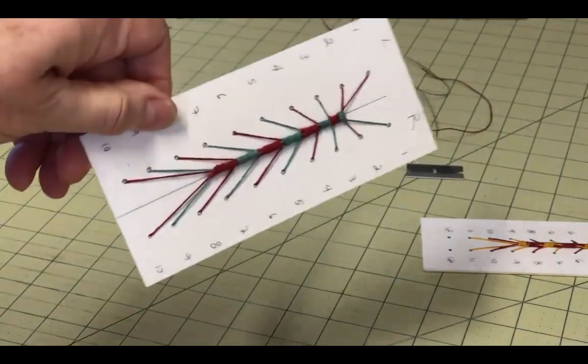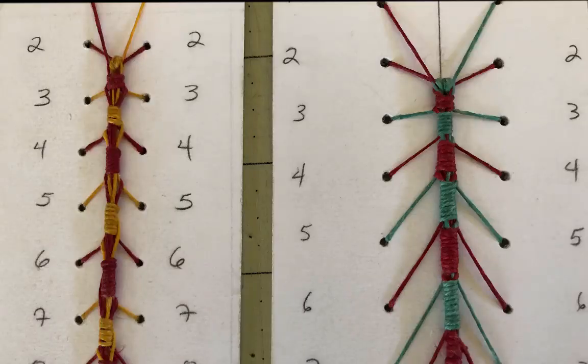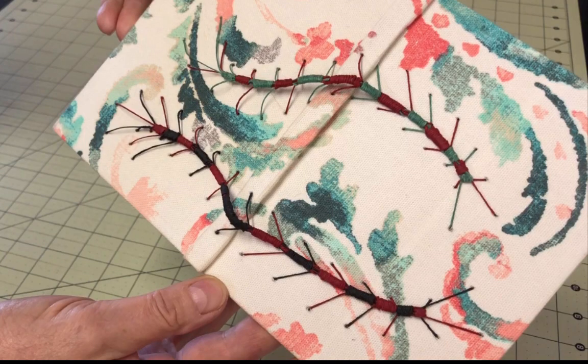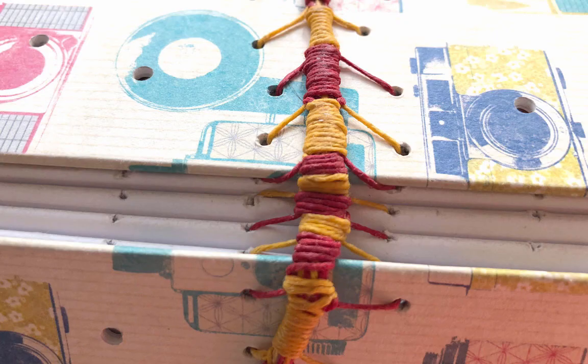That's the caterpillar stitch at its simplest, and you'd use it like this if you were just decorating the cover of a book or a box. There's a little more to it if you want to wrap the caterpillar around the front and back of a case-bound book like this, and there's even more to it if you want to incorporate it into the text block itself, making it part of the binding like this. You can see those details in part two of the caterpillar stitch.